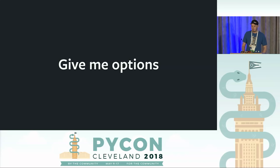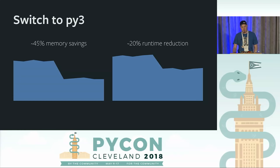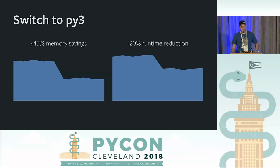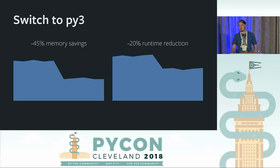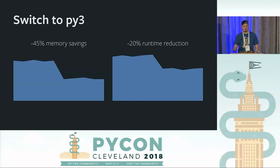We wanted to look at what options we had. We actually stumbled on the first one by accident. We were in the process of migrating from Python 2.7 to Python 3.5 and saw a massive memory and performance win just from making the switch. We originally made the switch for F strings and type annotations, but this actually gave us a lot of runway. However, switching to Python 3, even though it was a big performance win, wasn't really the long-term solution because it didn't change the way the service scaled with our growth.